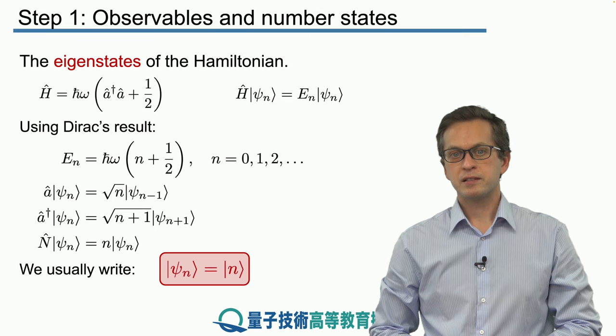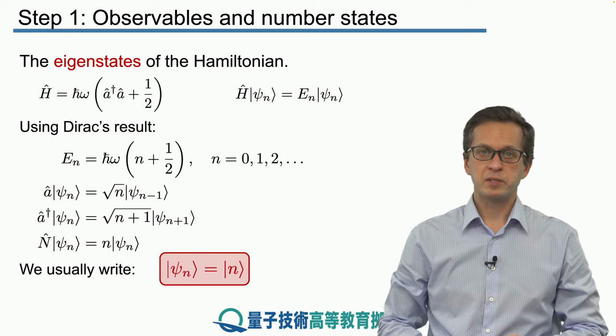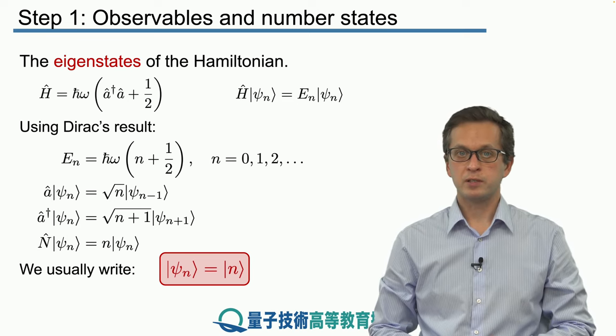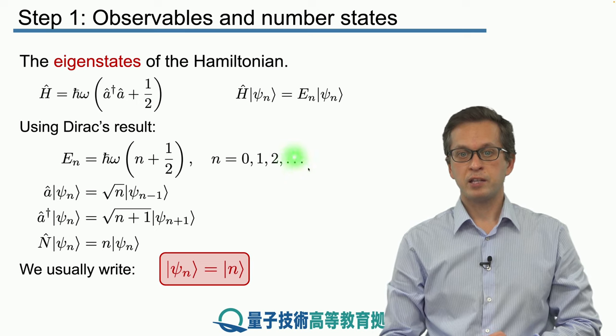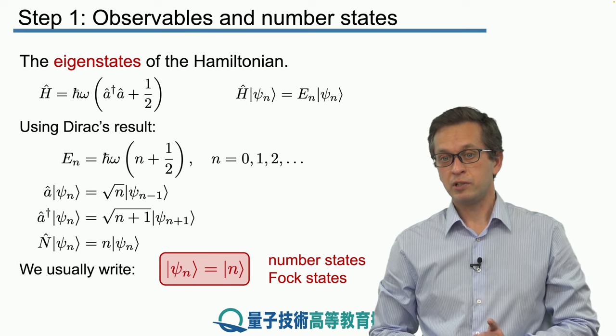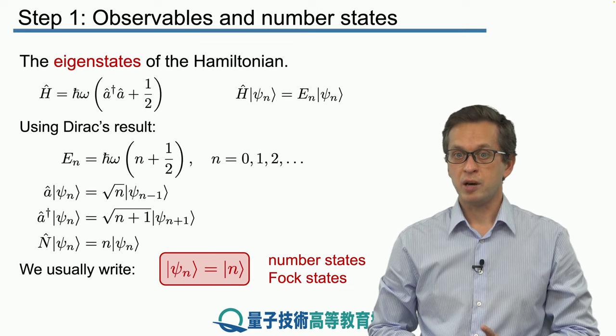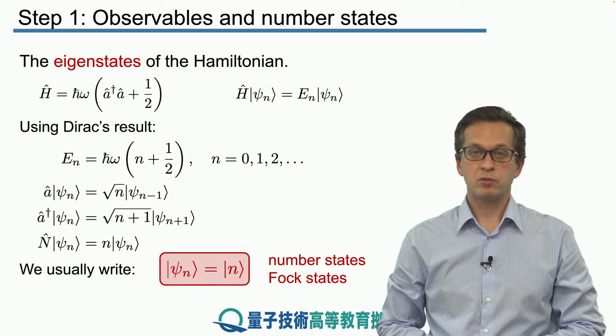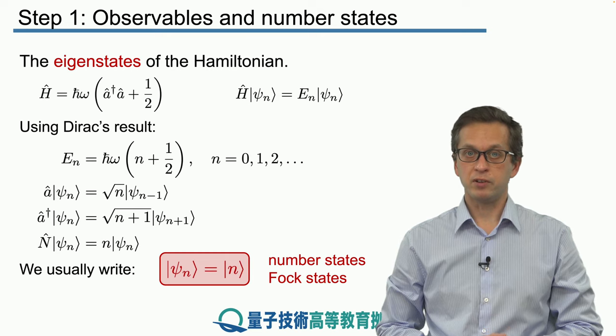These ψₙ are normally not written as ψₙ—we omit the letter ψ and write them as |n⟩. They're so important they have their own name: number states, or sometimes Fock states after Vladimir Fock.